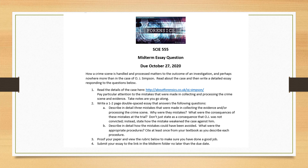After you read about it, you're going to write a one to two page, double-spaced essay that answers the following questions: Describe in detail three mistakes that were made in collecting the evidence and processing the crime scene. Why were they mistakes, and what were the consequences of these mistakes at the trial? Don't just say something like 'OJ was not convicted' — state specifically how the mistake weakened the case against him. For example, if there was mishandling of fingerprints, what was the direct problem with that at the trial?